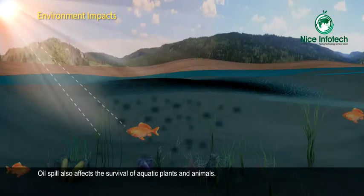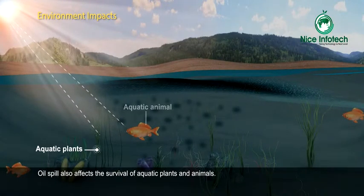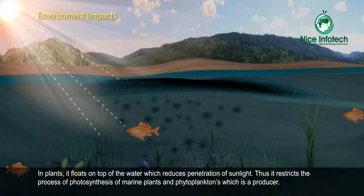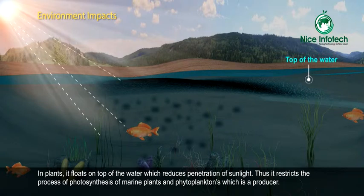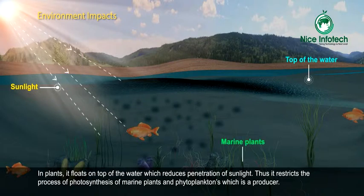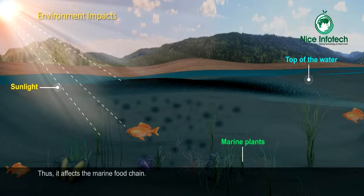Oil spill also affects the survival of aquatic plants and animals. In plants, it floats on top of the water, which reduces penetration of sunlight. Thus, it restricts the process of photosynthesis of marine plants and phytoplanktons, which are the producers. Thus, it affects the marine food chain.